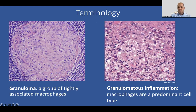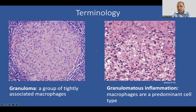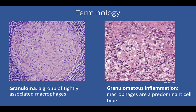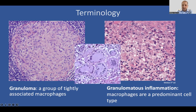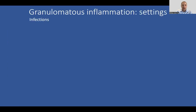By way of introduction, a little bit of terminology. When we say granuloma, in general, we're referring to a group of tightly associated macrophages — and pictured on the left is just about as perfect an example of a granuloma that we can see in tissue. In contrast, granulomatous inflammation is a histologic finding where macrophages are a predominant cell type in the infiltrate, but they don't necessarily form these well-formed granulomas. And multinucleate giant cells are groups of macrophages that have actually fused their cytoplasm, and that's a feature of both disorders.